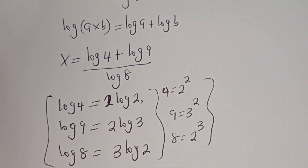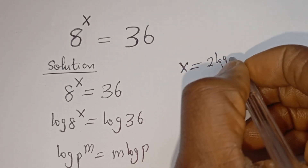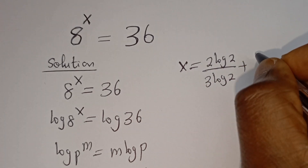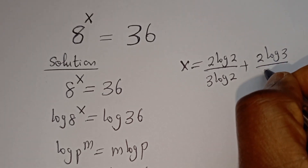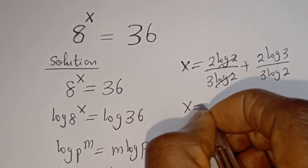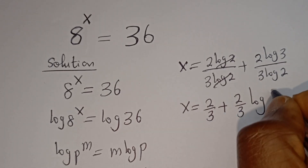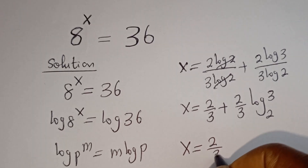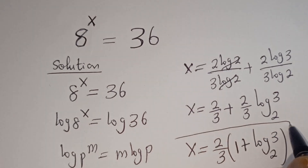Therefore, this can be written as x is equal to 2 log 2 over 3 log 2, plus 2 log 3 over 3 log 2. This simplifies — the log 2 terms cancel — giving x is equal to 2 over 3 plus 2 over 3 log 3 base 2. Therefore x is equal to 2 over 3 bracket 1 plus log 3 base 2, and this is the final answer.